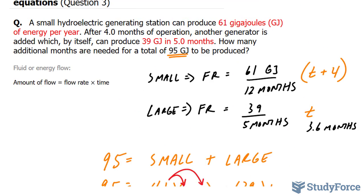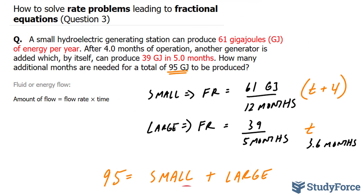What this means is that this new generator needs to work 5.8 months, an additional 5.8 months, to produce 95 gigajoules along with the small one that's already been working 4 months plus the 5.8.